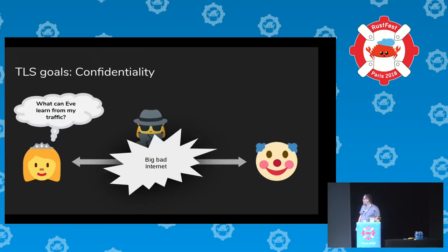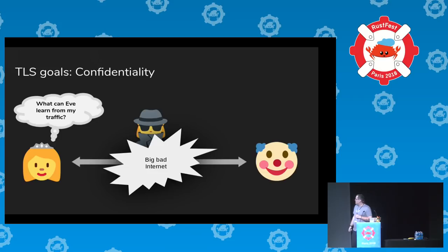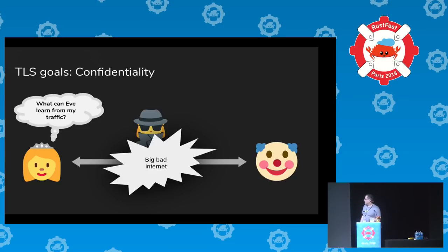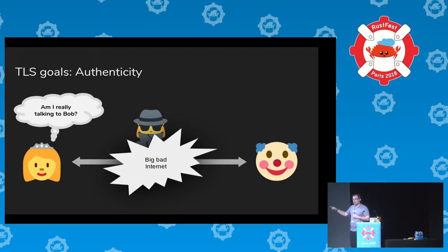The classic cast of characters: Alice wants to talk to Bob, and Eve is an eavesdropper watching traffic. Alice and Bob don't want Eve to learn about their communications — that's one thing TLS aims to do. The second goal is authenticity: Alice wants to know she's actually talking to Bob and not Mallory in the middle.